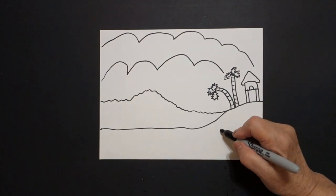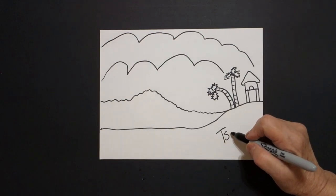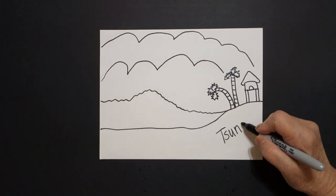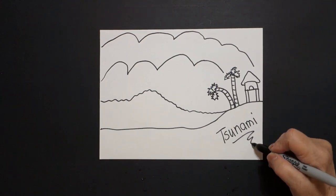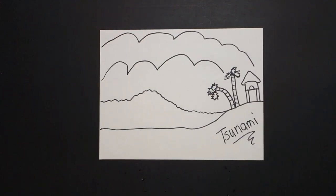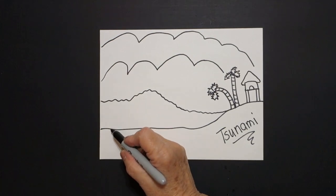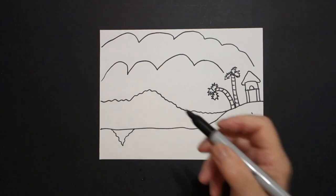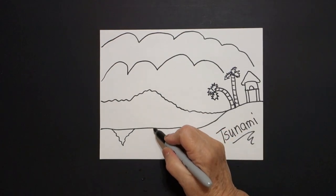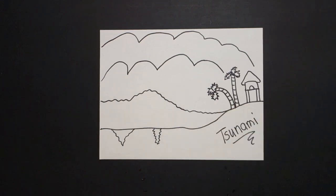Now we're ready. First off, tsunami — I'll label it with a squiggle. Starting over here on the left-hand side, I'm going to do wavy line down, wavy line up, connect. And next to it, I'm going to do a tighter one, wavy line down, wavy line up, connect.